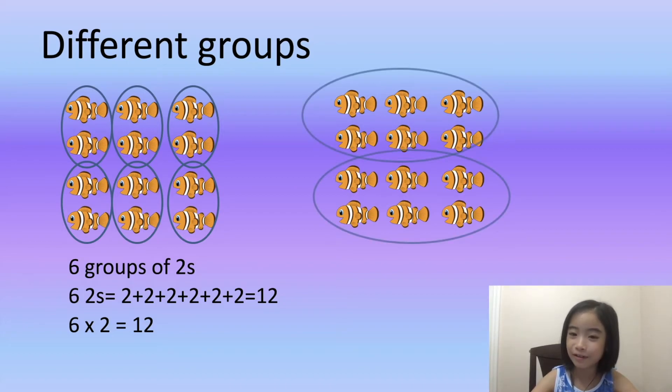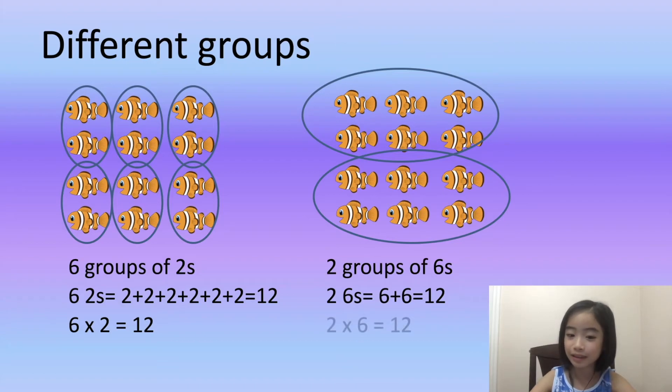And here's another example. I have two groups, each with six fishes. I have two groups of six equals six plus six equals twelve. Two times six equals twelve.